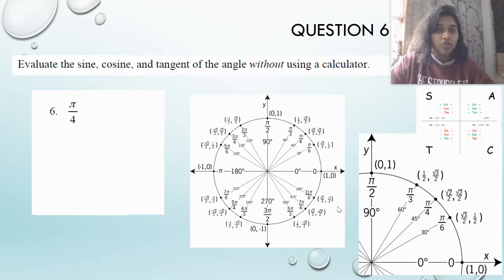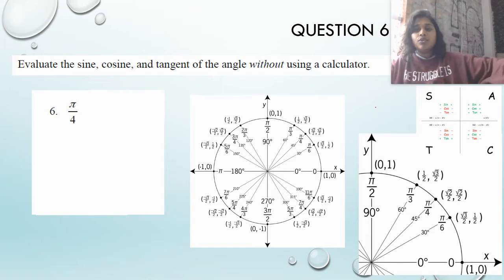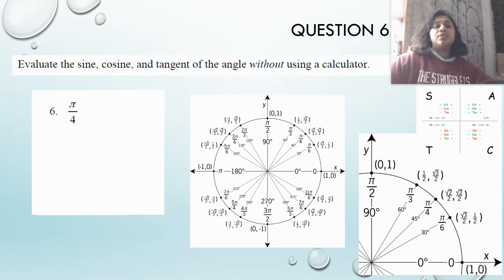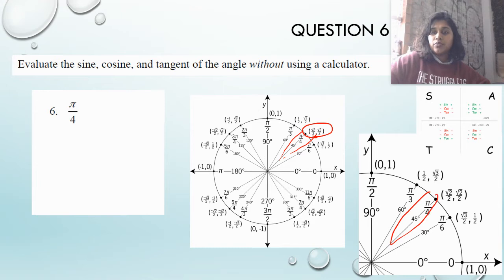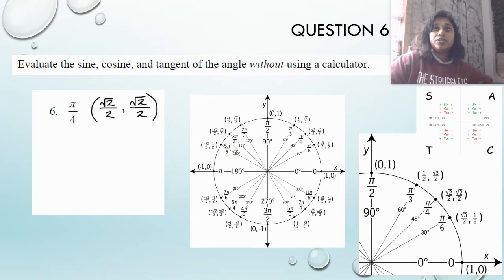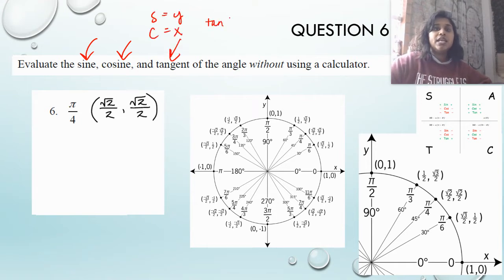All right, let's jump in. We're going to evaluate 4 questions, and for each I'm going to show you either using the actual unit circle, the hand trick, or the chart trick. So evaluating the sine, cosine, and tangent of this angle without a calculator. If I'm looking at pi over 4, I know I'm in quadrant 1. I go to my pi over 4, and that is the x, y coordinate I'm looking for. Quadrant 1 means everything is positive. Sine is my y value, cosine is my x value, and tangent is y divided by x — really the y's numerator over the x numerator.